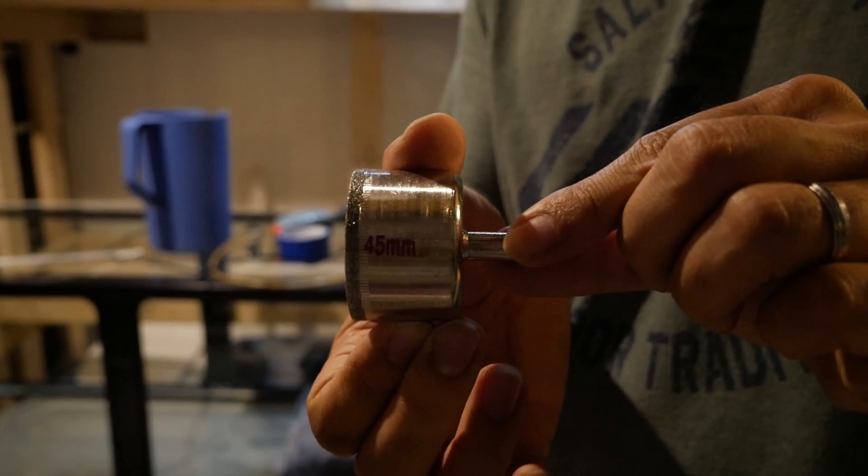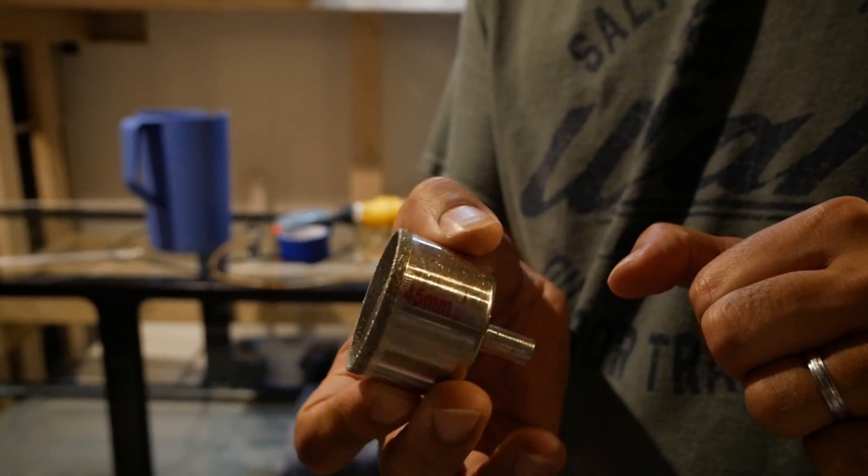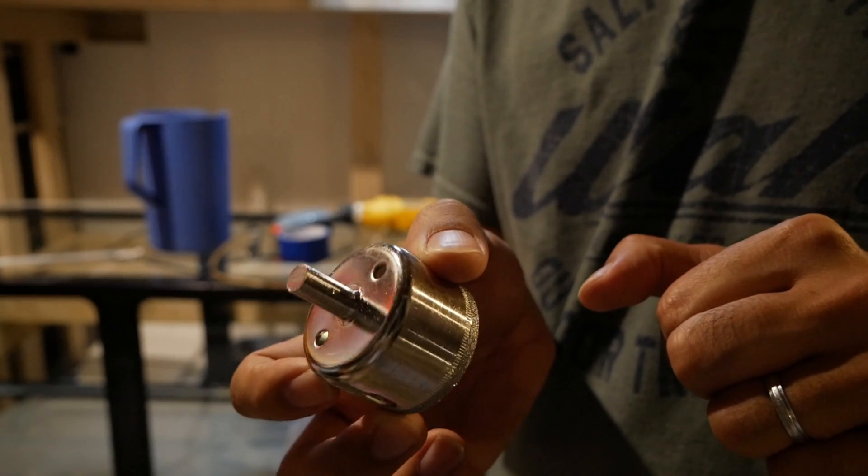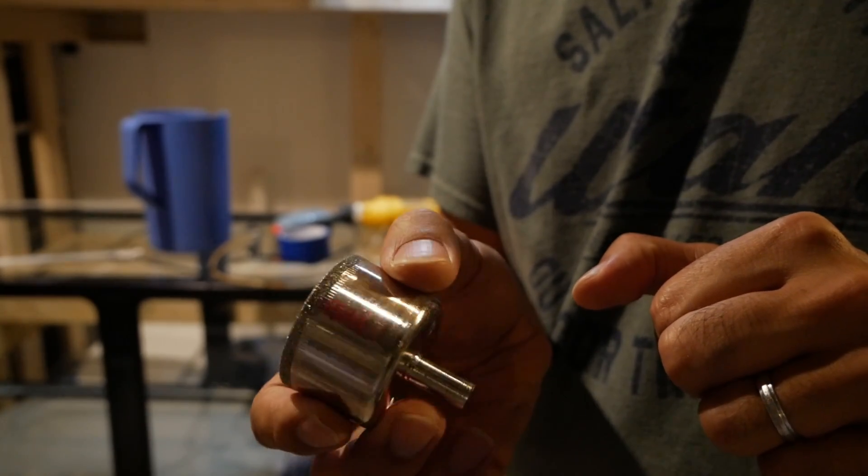Here is the drill bit. Again it's 45 millimeters diameter, about an inch and three quarters, with a diamond coated tip to be able to cut through the glass.